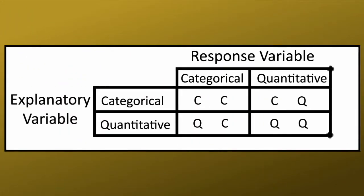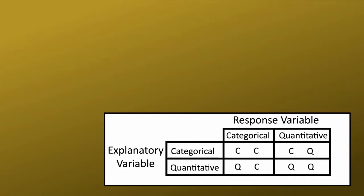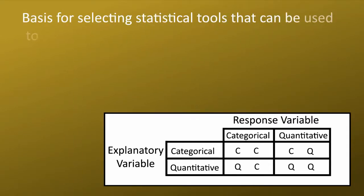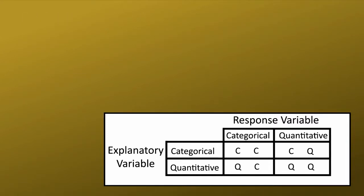This role-type classification can be summarized and easily visualized in this table. This classification system serves as the structure for the rest of this course. You'll find that not only does it help you to construct graphs, but it's also the basis for selecting statistical tools that can be used to explore the relationship of variables you're interested in. The tools for statistical analysis and for visually representing the relationship between variables are based on the role and type of each variable — whether response or explanatory, and whether categorical or quantitative.